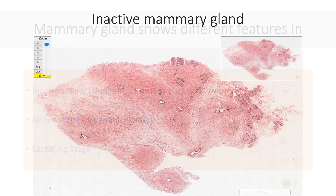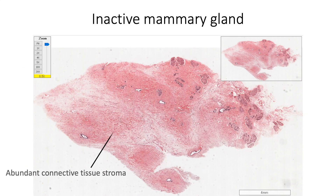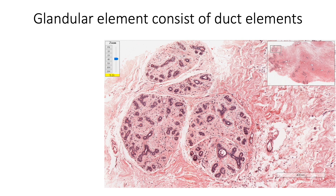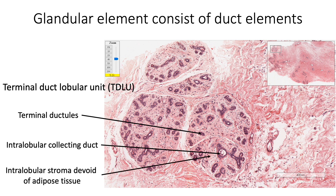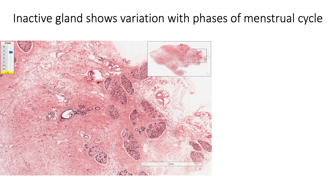The inactive mammary gland has abundant connective tissue stroma but sparse glandular parenchyma. The glandular element consists mainly of duct elements. The functional terminal duct lobular unit shows presence of terminal duct tubules, intralobular collecting duct, and sparse intralobular stroma which is devoid of adipose tissue. This inactive gland shows variation with phases of the menstrual cycle.